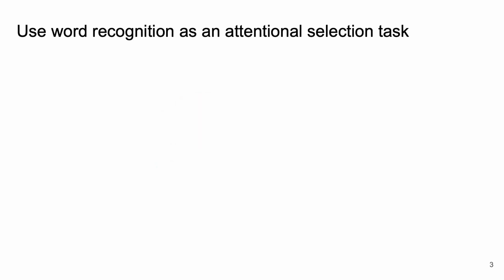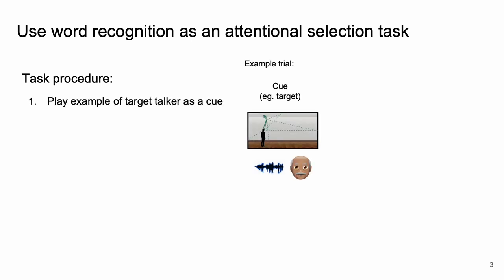To build our models we operationalize word recognition as an attentional selection task. The task goes something like this: First we play an example of our target talker as a cue, and this cue is going to indicate the voice and location of the target within a spatialized mixture.